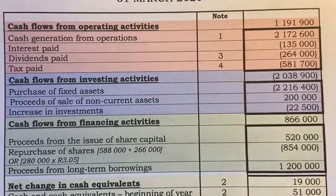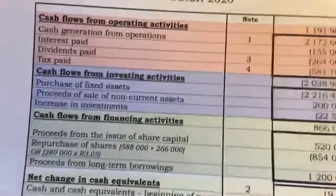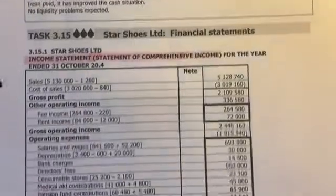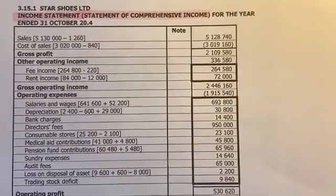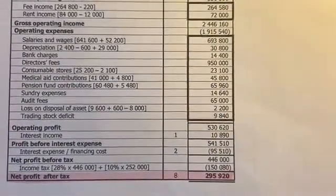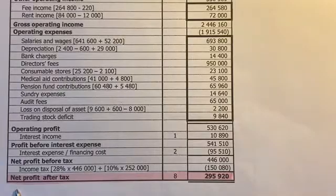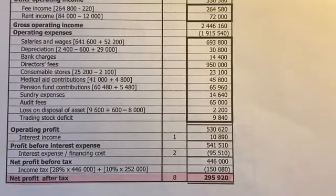Let's ask the question: why are we doing a cash flow statement? We had an income statement — or statement of comprehensive income — which we've been doing since grade 10, and right at the bottom is the whole purpose of it: to work out did I make a profit or did I make a loss. In this example, it's 295,920.